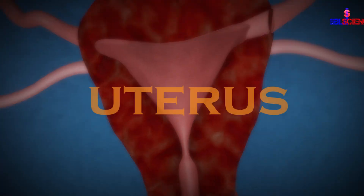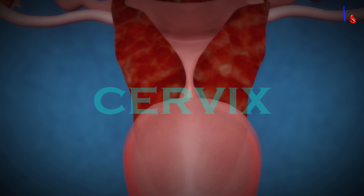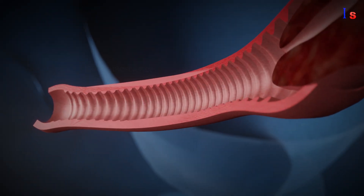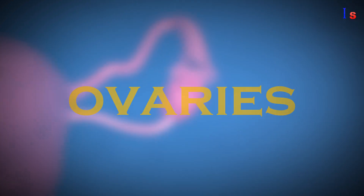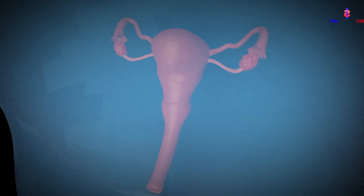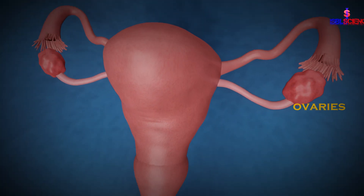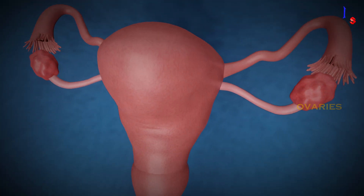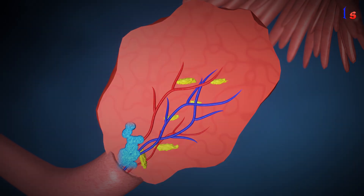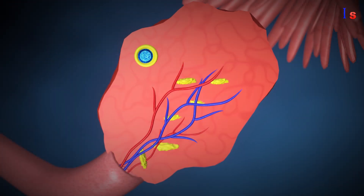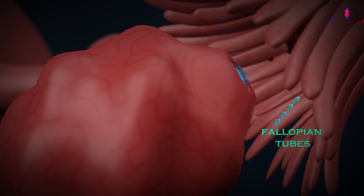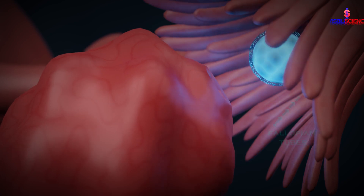The female reproductive system consists of several organs and structures, each with its own role in reproduction. The ovaries are two small almond-shaped organs located in the pelvic cavity. They produce and release eggs during a process called ovulation. Once released, the egg travels through the fallopian tubes.